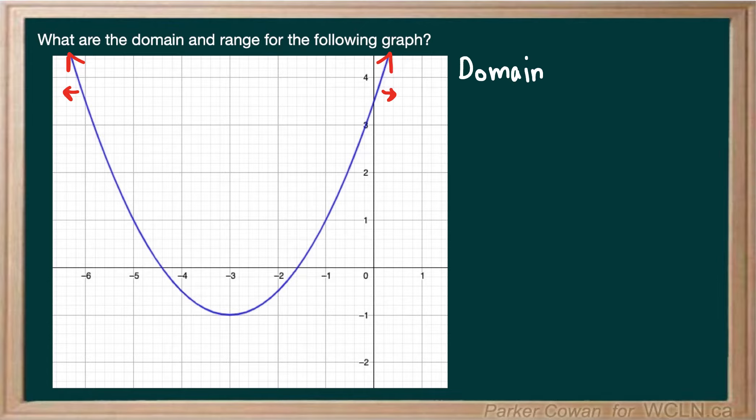So as this graph continues upwards, it's also continuing either to the right or the left depending on which of these arms we look at. So for that reason we can essentially state that the X values can assume any real number. So for X we say X∈R.